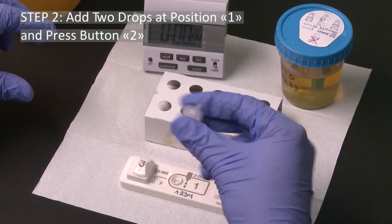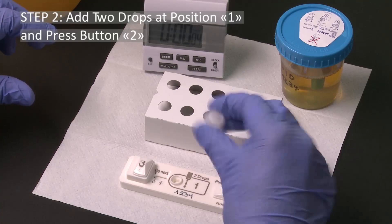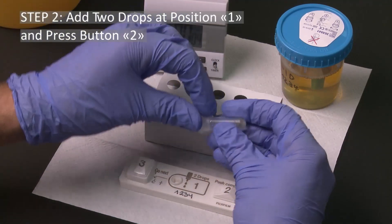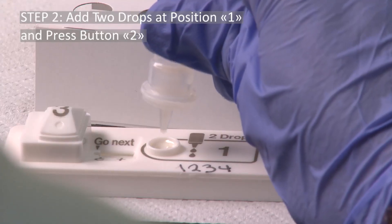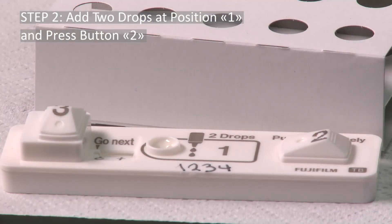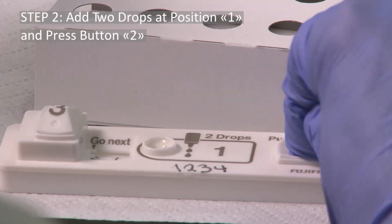Mix the tube again ten times. Now, add two drops of sample from the tube to the test device at position one and immediately press button two to release the reducing reagent for the silver amplification.